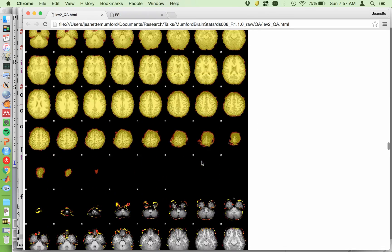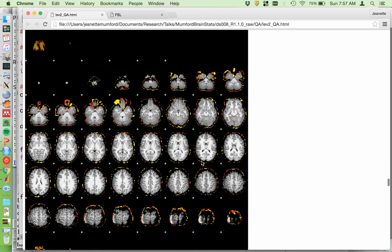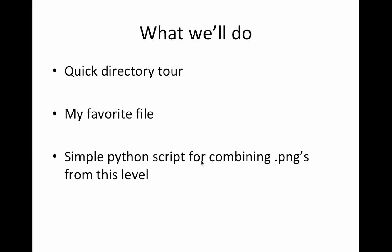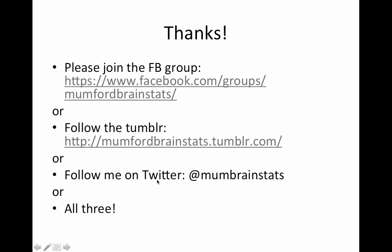These all look good. I would say, deem this a successful Level 2 across all subjects. My favorite file is the filtered func data because it gives me a way to quickly check over all the input data to make sure they look okay. I wouldn't say I generally look through that for everybody at the second levels, but definitely at the third level I always look at the filtered func image. I'll put a link to the Python script in the description box. Please join the Facebook group, follow on Tumblr, follow on Twitter, or all three, and have a wonderful day.